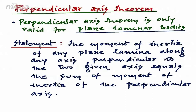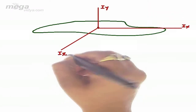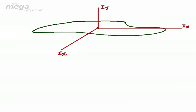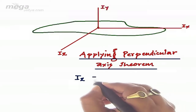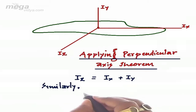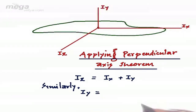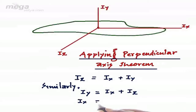According to Perpendicular Axis theorem, the moment of inertia of any plane laminar body along any axis perpendicular to the two given axes equals the sum of the moment of inertia along those two perpendicular axes. Let Ix, Iy, and Iz be the moment of inertia along the respective axes of the plane laminar body. Applying the theorem: Iz = Ix + Iy, similarly Iy = Ix + Iz, and Ix = Iy + Iz.